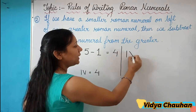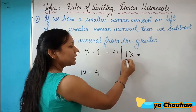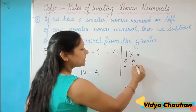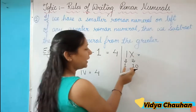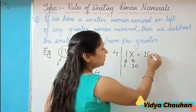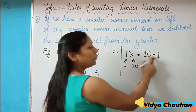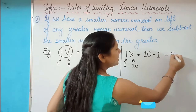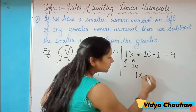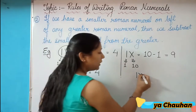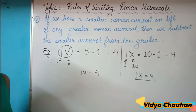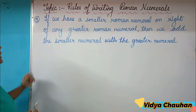Similarly, if the digit is IX — I represents 1 and X represents 10. Once again there is a smaller numeral to the left of the bigger one, so we subtract: 10 minus 1 equals 9. It means the symbol IX in Roman format represents the digit 9 in Hindu-Arabic. This is our second rule.